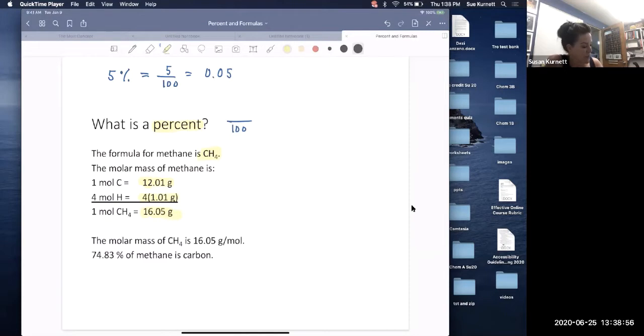And then we could be told that we're going to solve for 74.83% of methane as carbon. So I'm going to use methane as example of looking at one element in a compound in a percent kind of way.